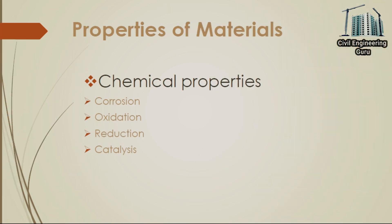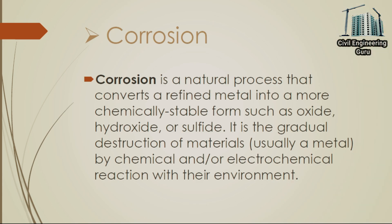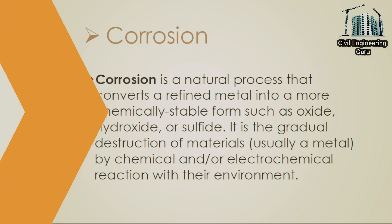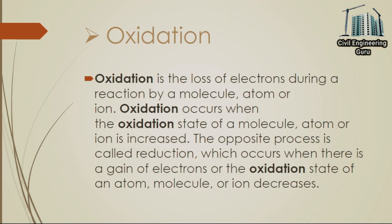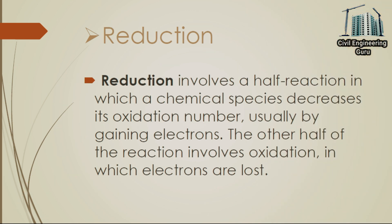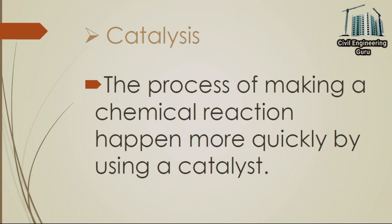Chemical properties include corrosion — a natural process that converts a refined metal into a more chemically stable form such as oxide, hydroxide, or sulfide; it is the gradual destruction of materials by chemical or electrochemical reaction with their environment. Oxidation is the loss of electrons during a reaction by a molecule, atom, or ion; it occurs when the oxidation state increases. The opposite process, reduction, occurs when there is a gain of electrons or the oxidation state decreases. Reduction involves a half-reaction in which a chemical species decreases its oxidation number, usually by gaining electrons. Catalysis is the process of making a chemical reaction happen more quickly by using a catalyst.